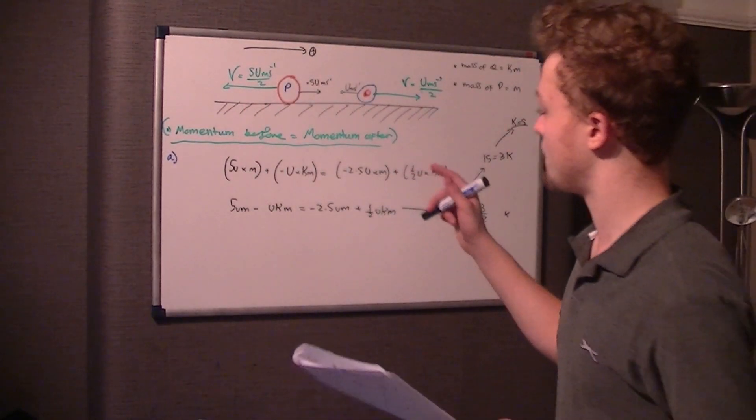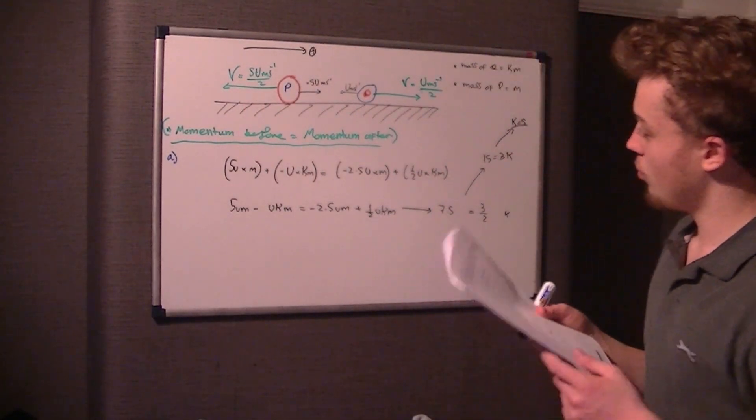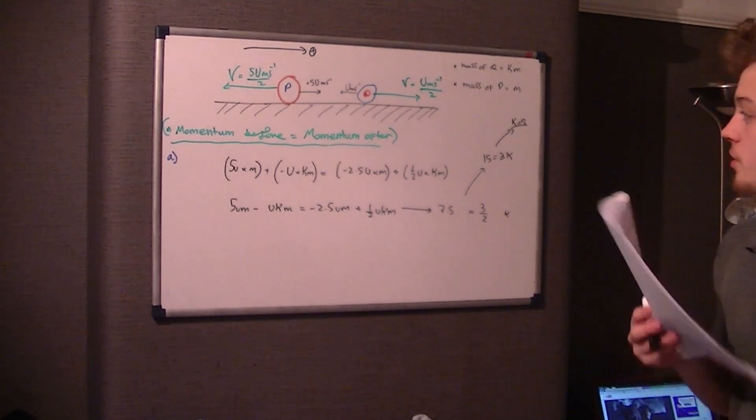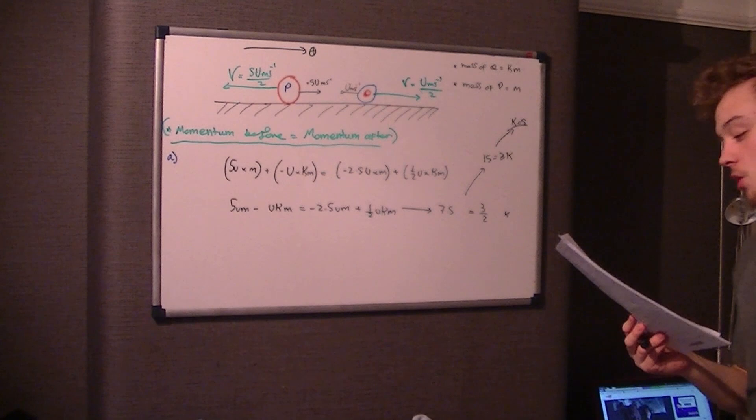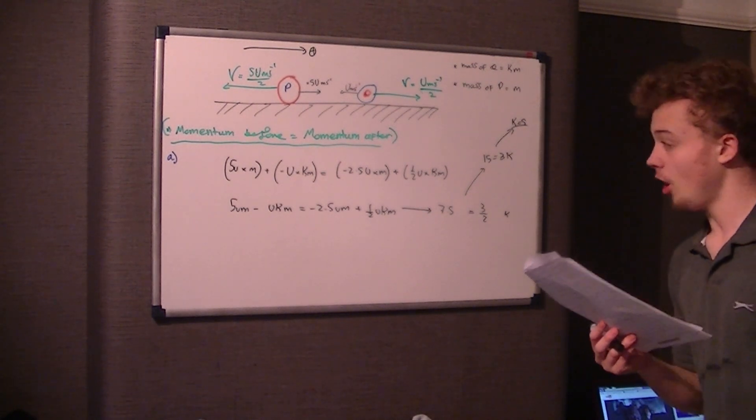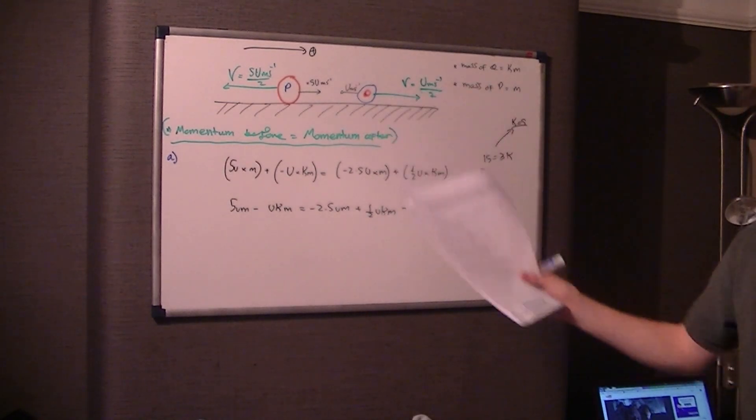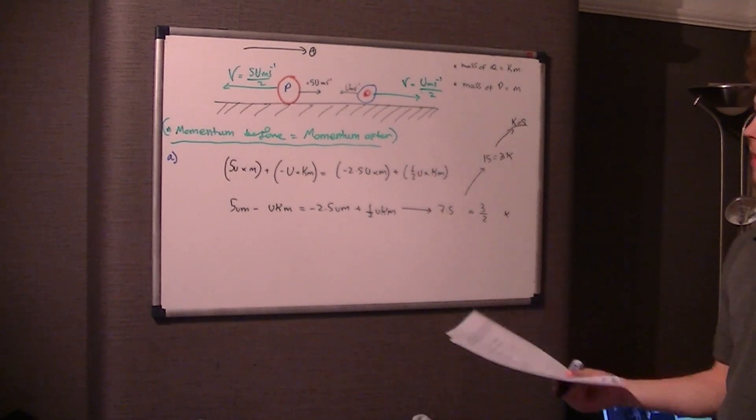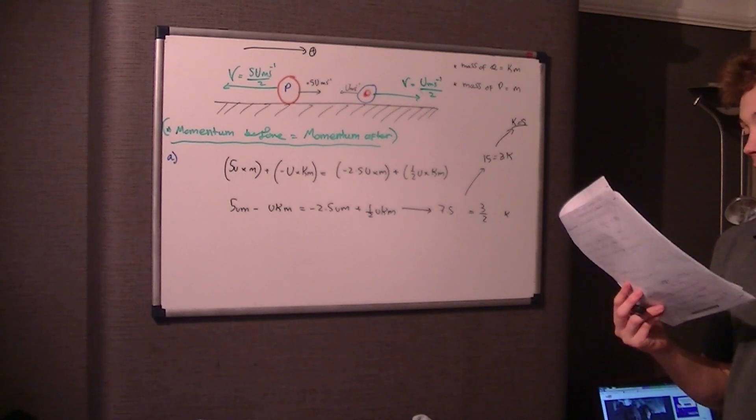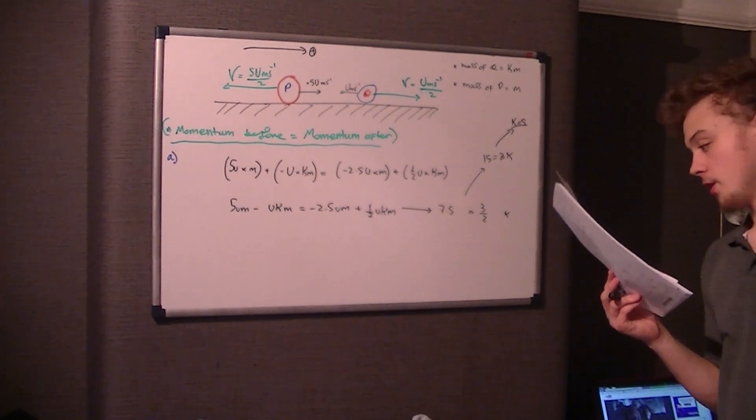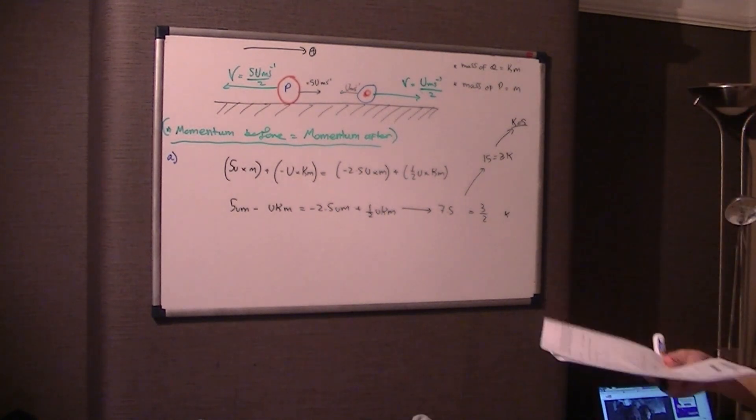Exerted on P by Q. You might have to read that sentence once or twice to be able to understand what it's actually asking. So the magnitude of the impulse exerted on P by Q. So when Q crashes into P and pushes it the other way, because obviously it's got a higher mass, otherwise you wouldn't be able to do that. So Q is giving this momentum.